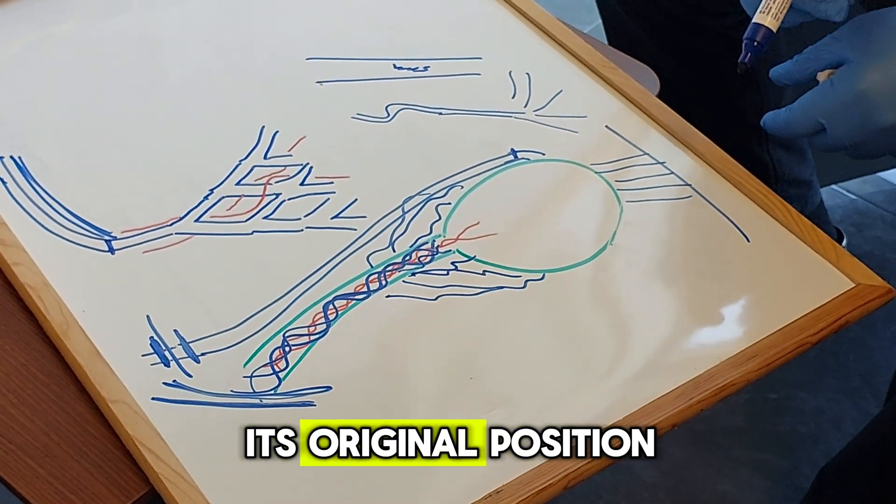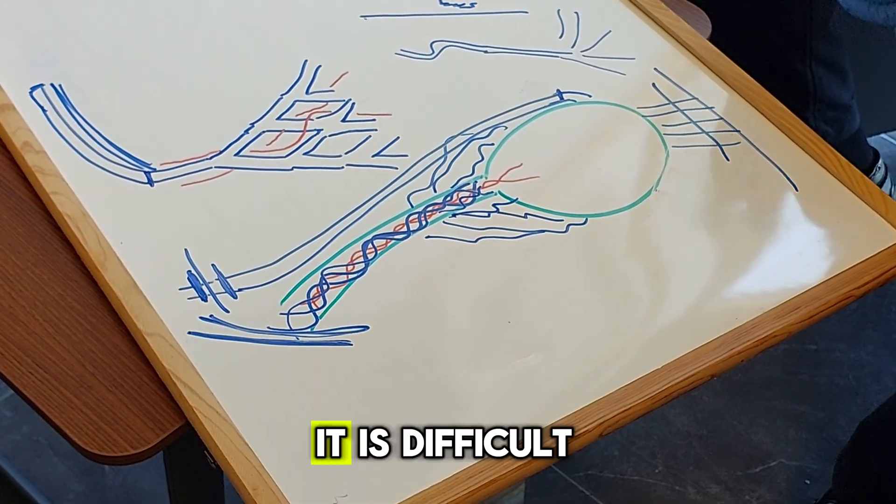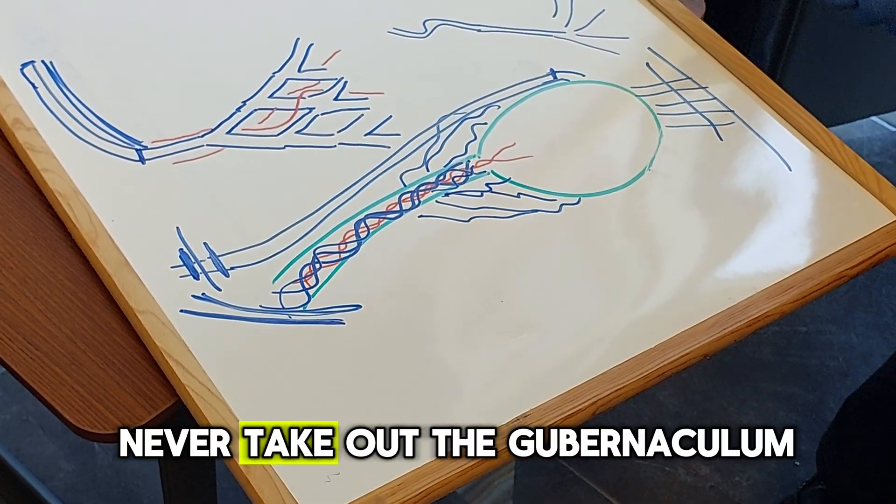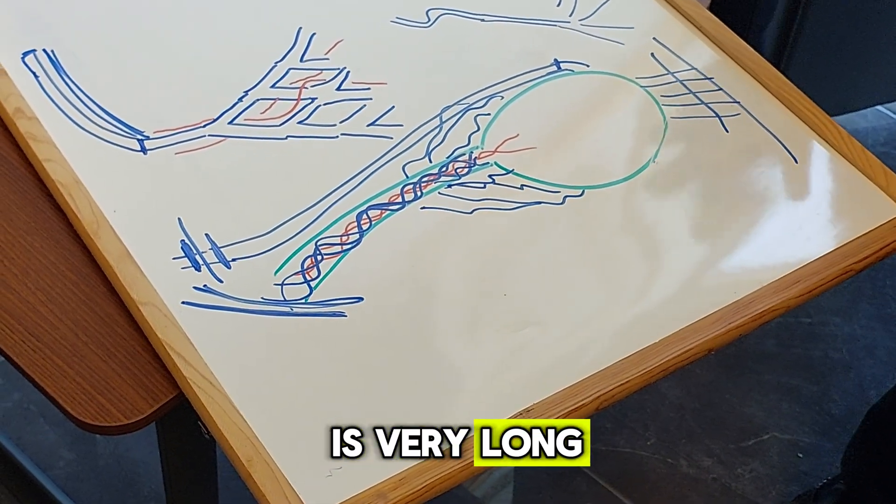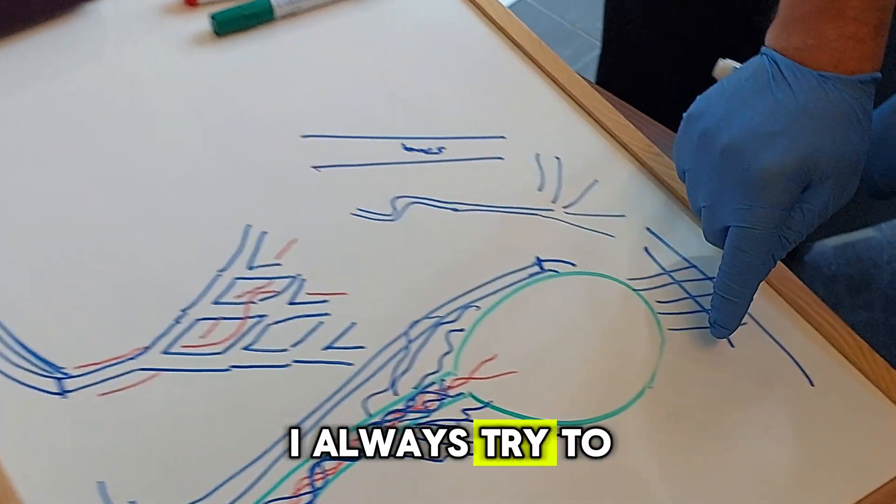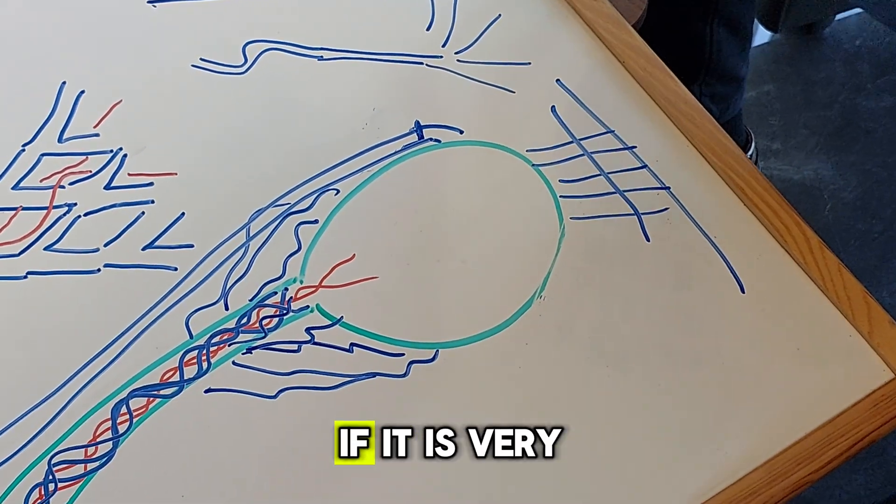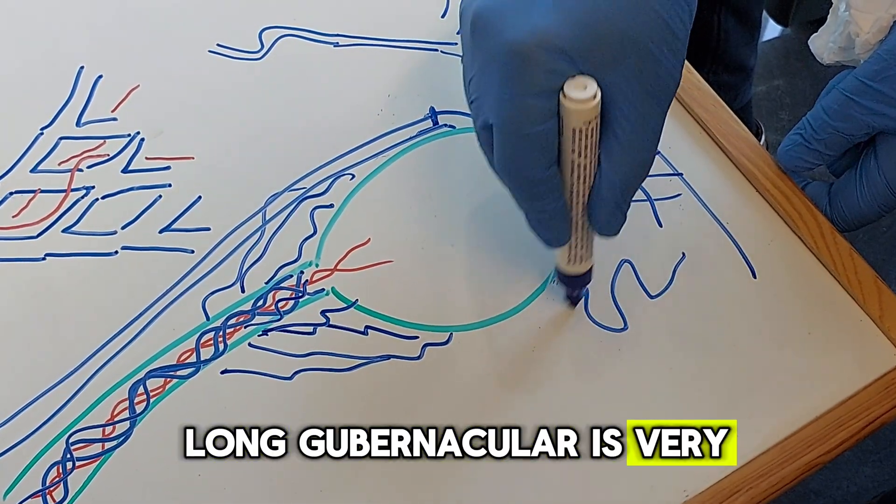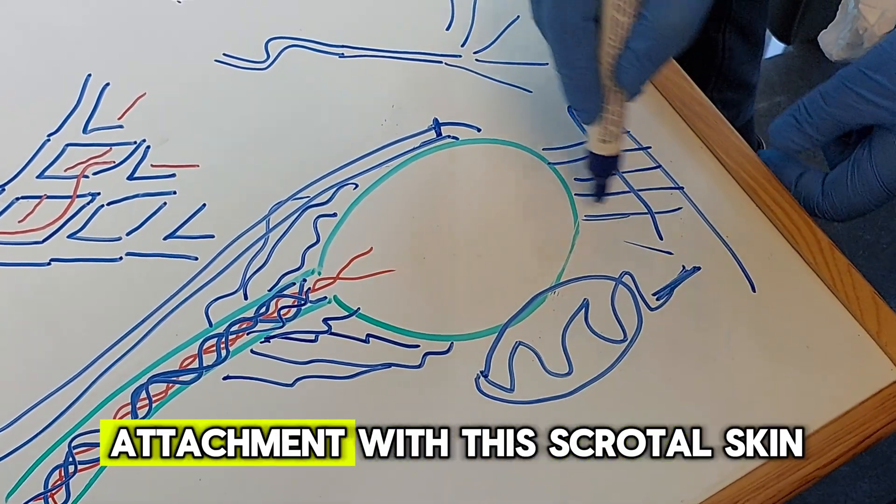But if we lose this connection it is difficult to place. I never take out the gubernacular usually, very rarely. If it is very long I always try to leave some connections here, attachments. If it is very long gubernacular, I remove some parts but always leave some attachment with the scrotal skin.